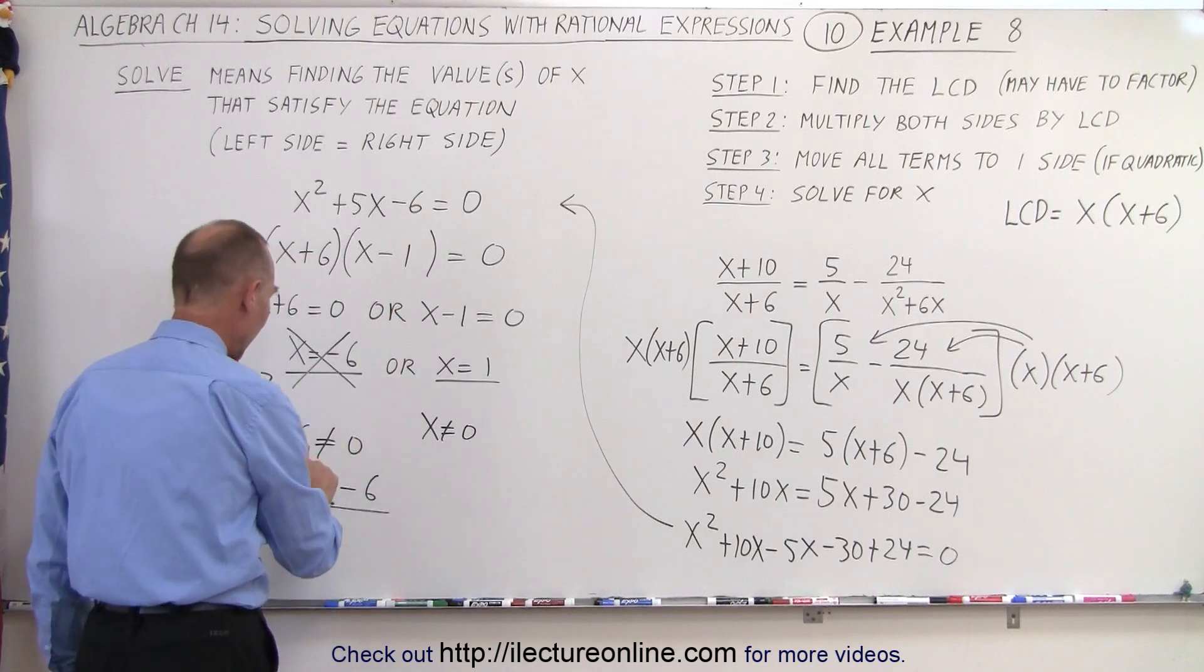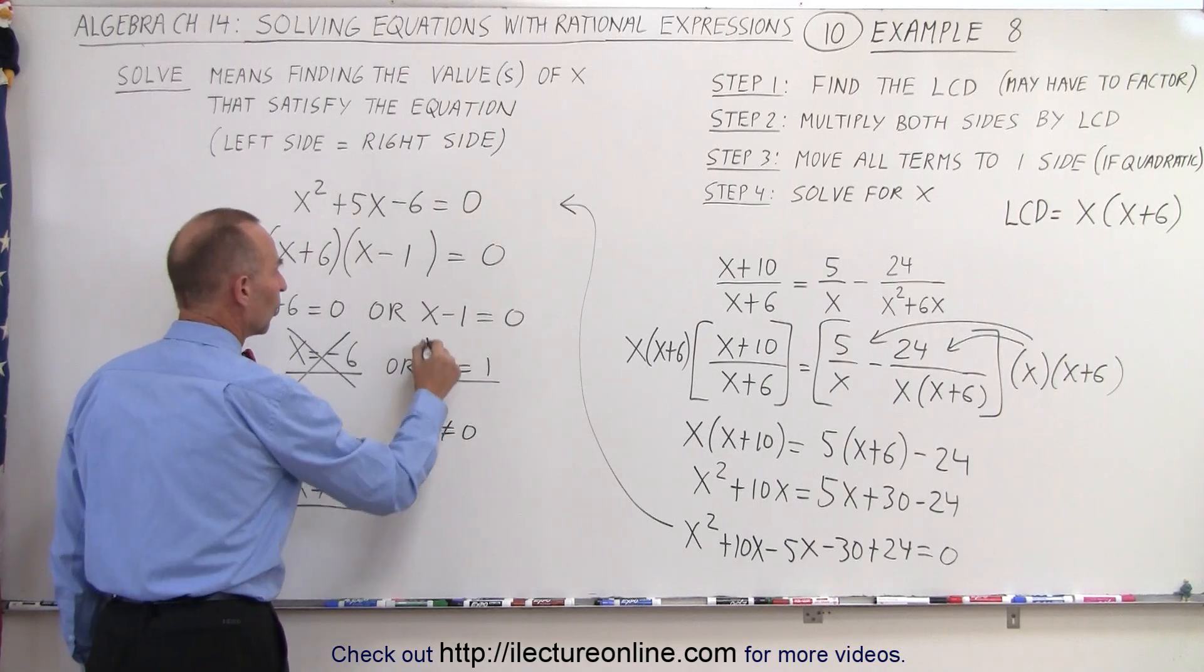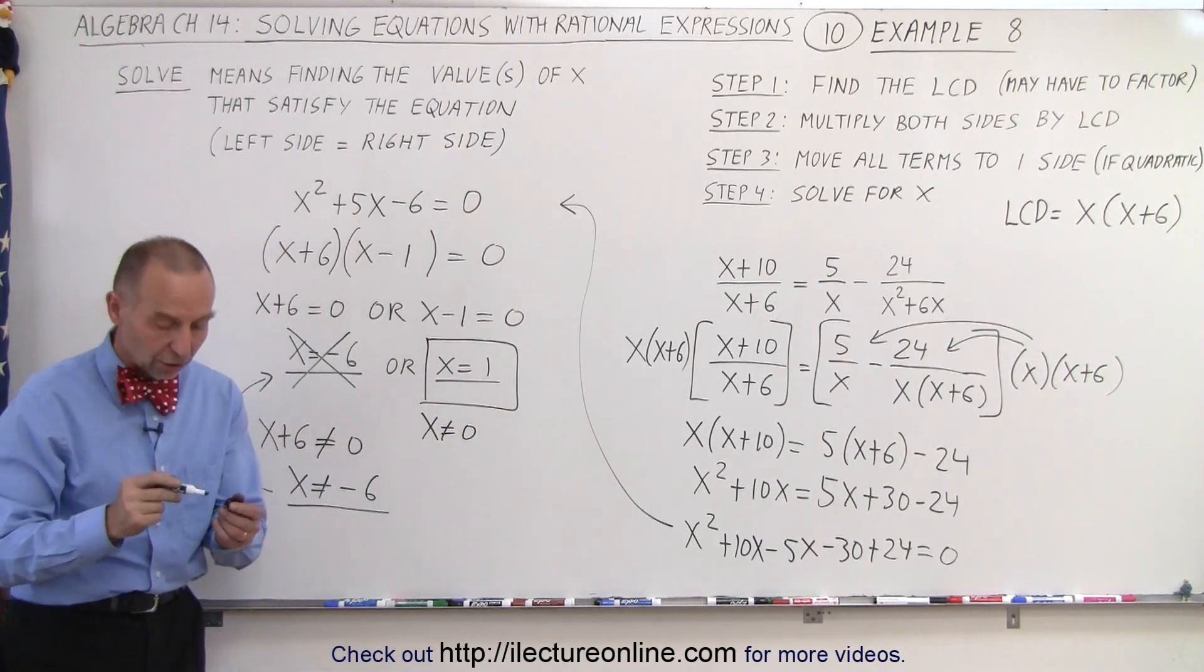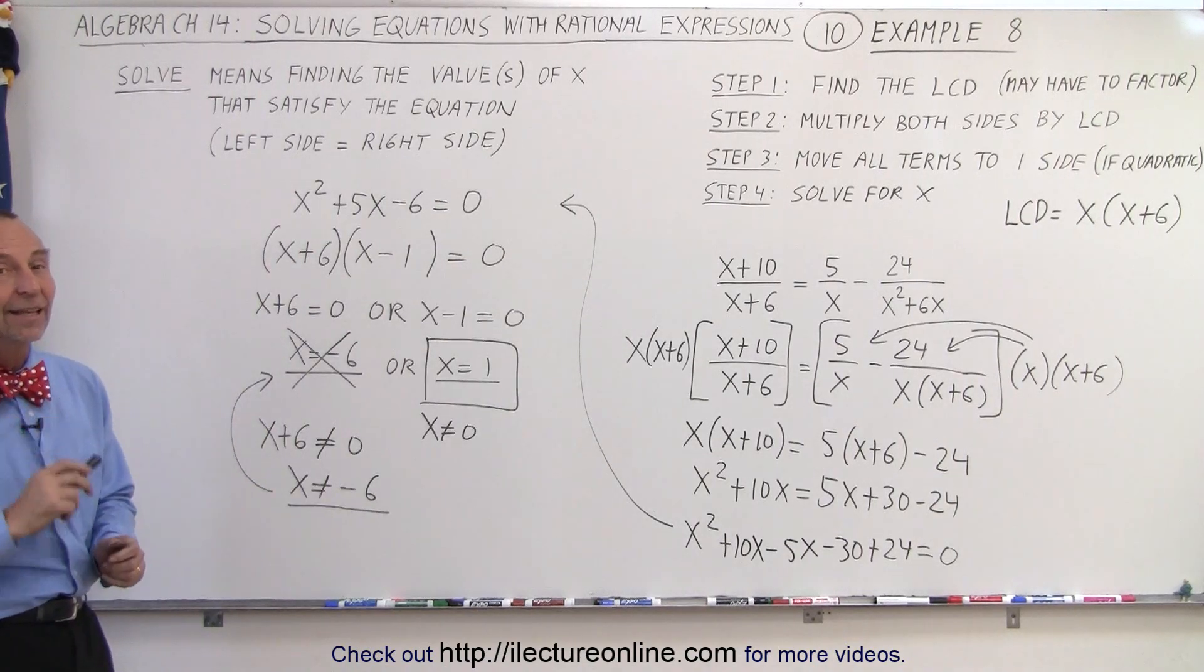And let's see, is there anything else? Yep, that's it. So x cannot equal zero, x cannot equal -6. So that eliminates this as a solution, which leaves us only with one valid solution to this particular problem: x = 1. And that is how it's done.